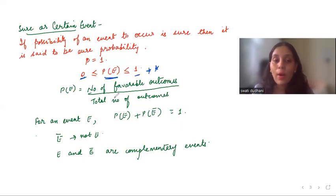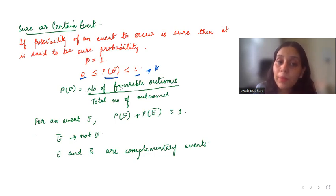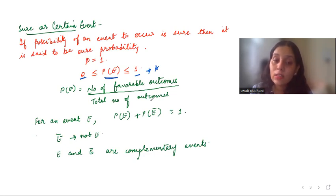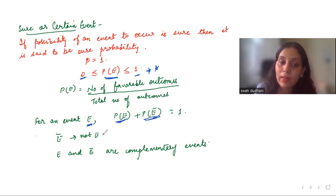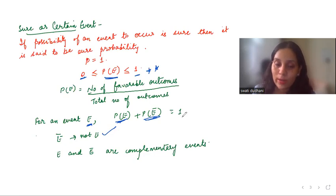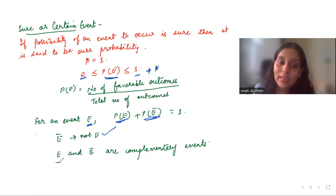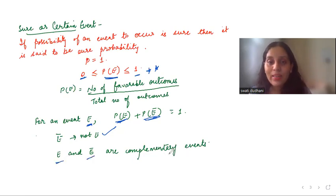How do we find the probability of an event? Probability of an event equals number of favorable outcomes divided by total number of outcomes. For any event E: probability of E plus probability of E-bar equals one, where E-bar means 'not E'. So the probability of getting an event plus the probability of not getting an event equals one. E and E-bar are complementary events.